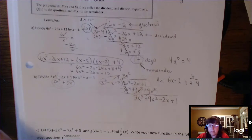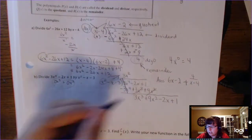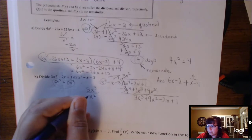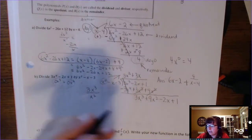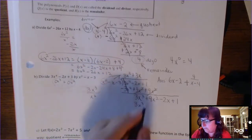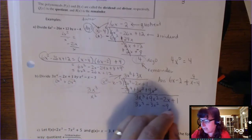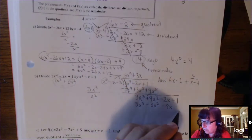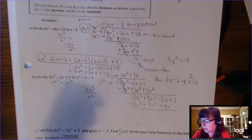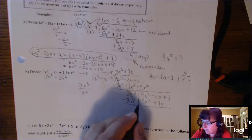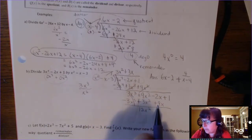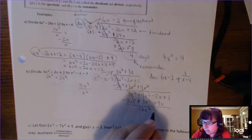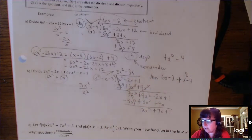Now the first step is done. Start over: 3x cubed divided by x squared is 3x. Distribute that 3x to all three terms: 3x cubed minus 3x squared minus 9x. Draw your line and change the signs. 3x cubed terms cancel. 9x squared plus 3x squared gives 12x squared. Negative 2x and positive 9x: different signs, so subtract and take the sign of the larger — positive 7x. Bring down the plus 1.